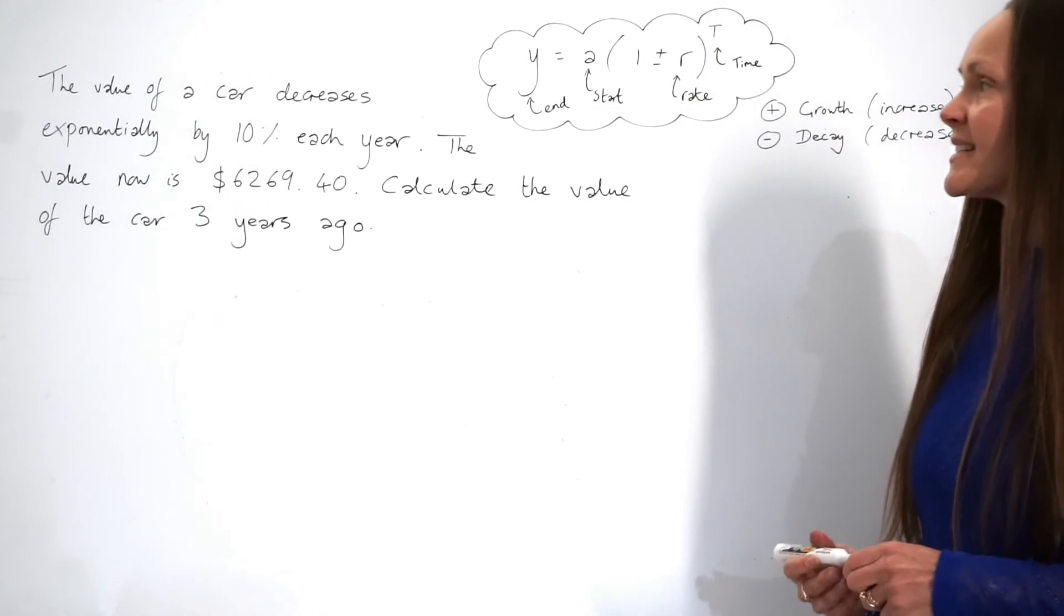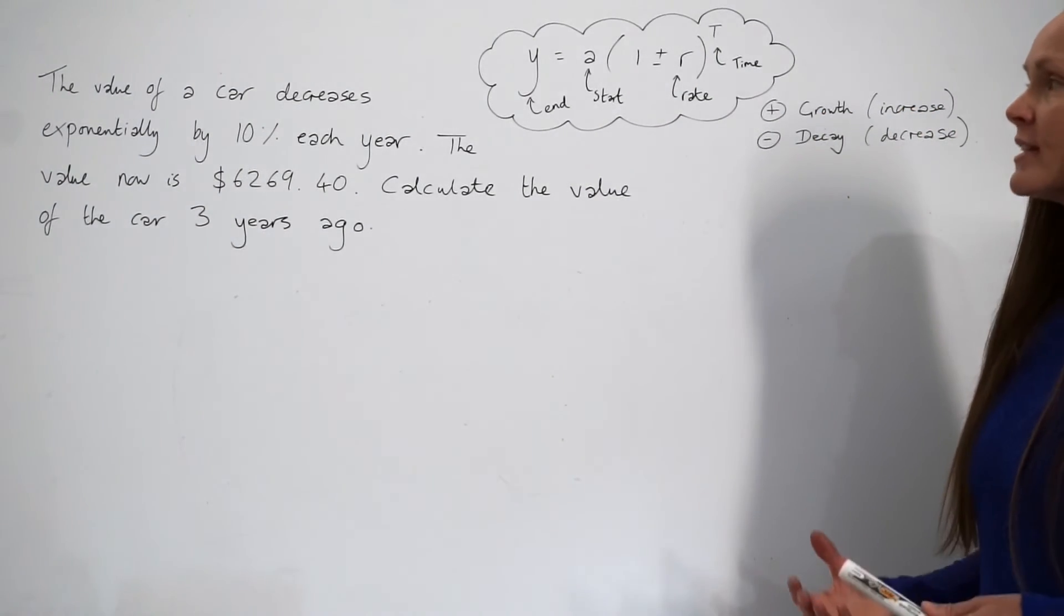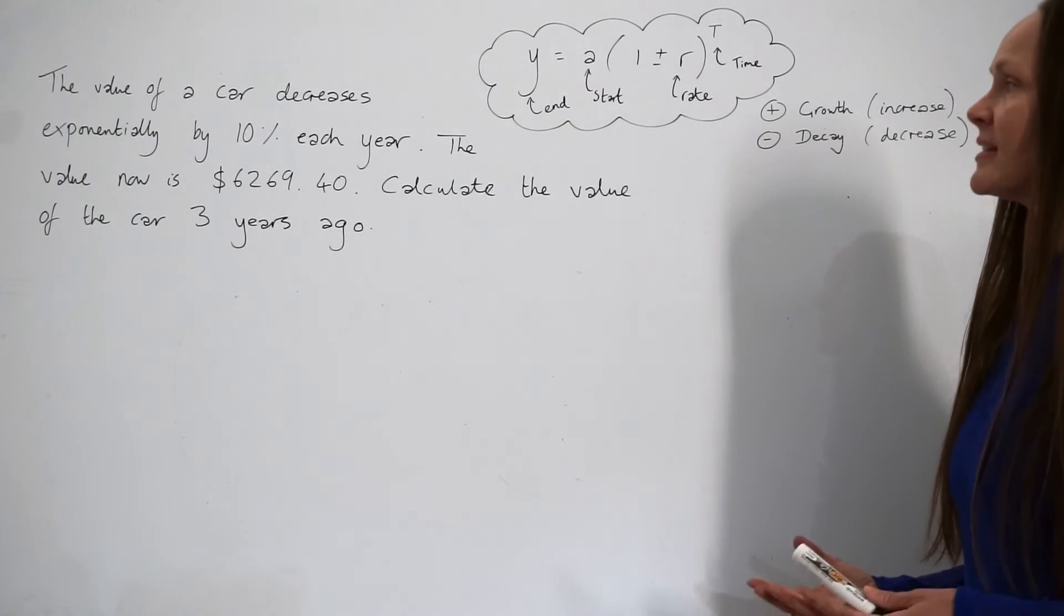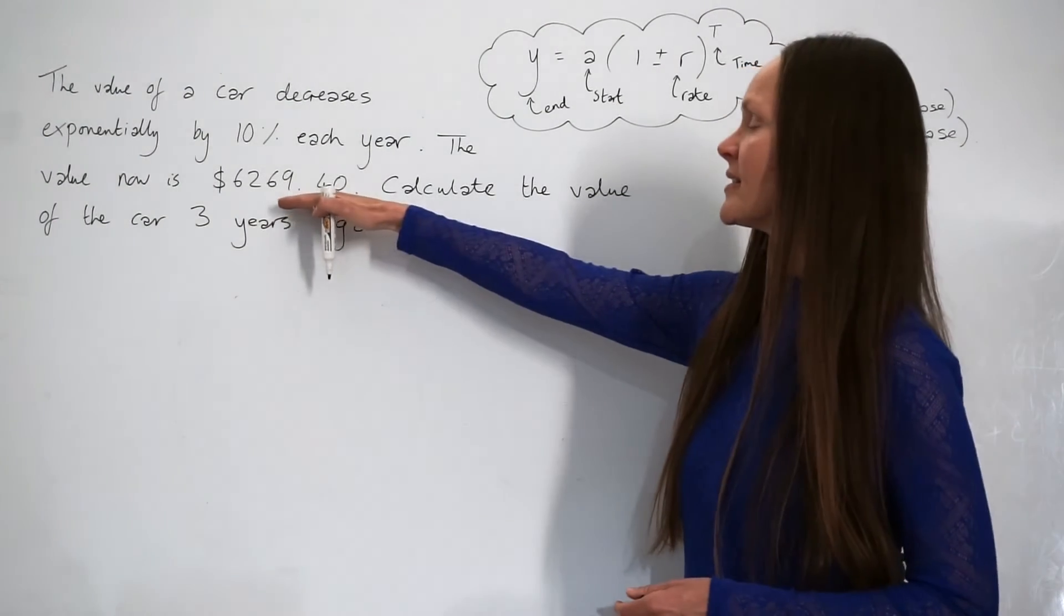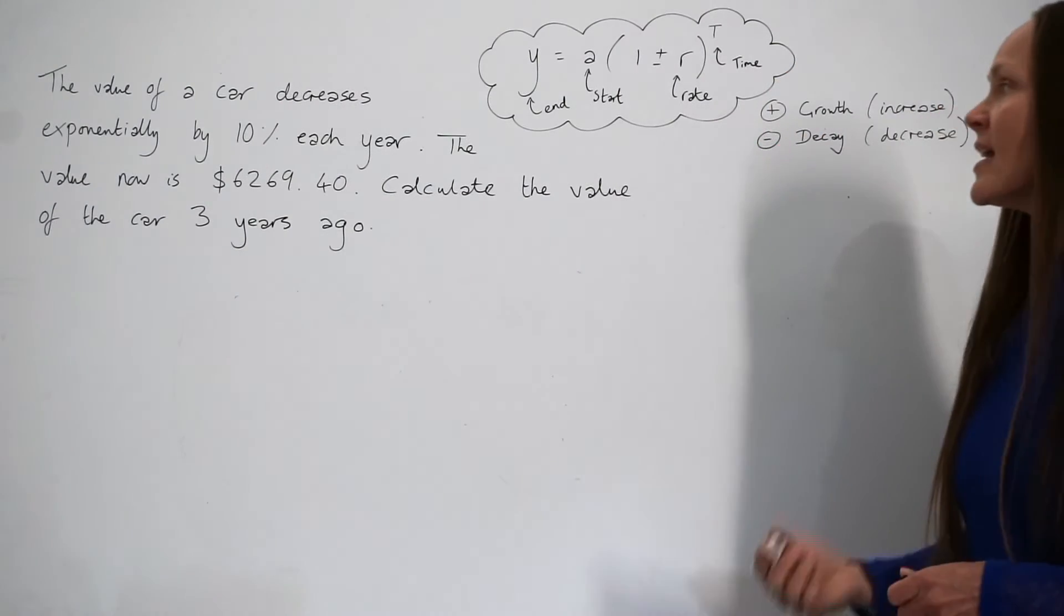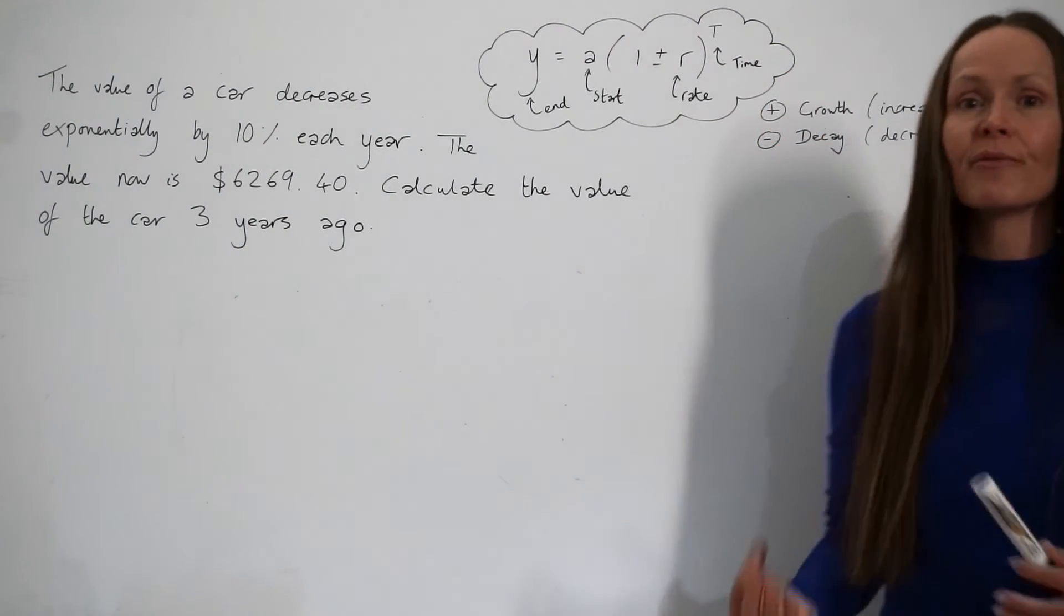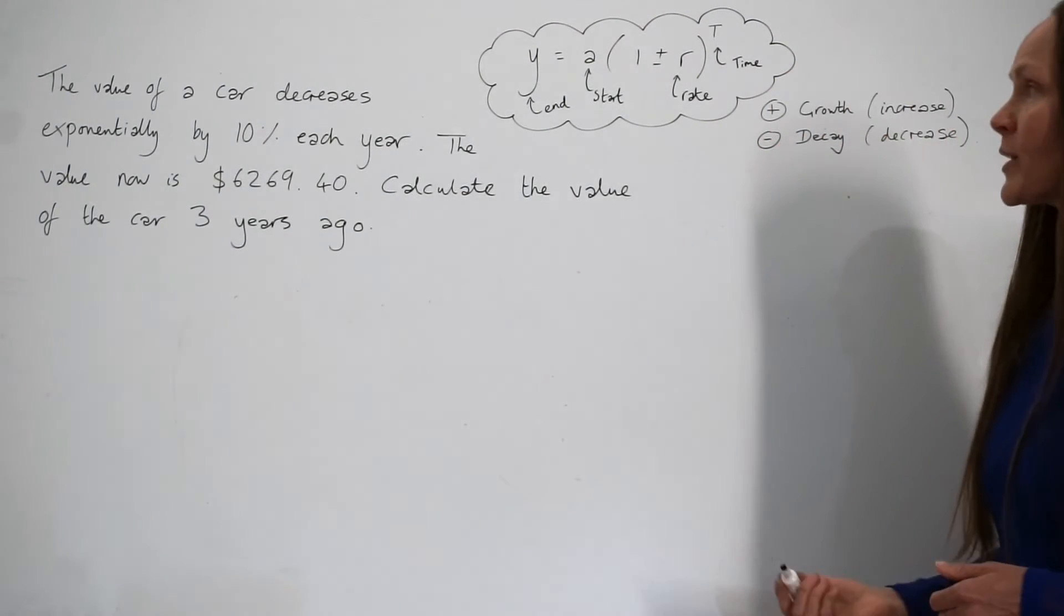So in this question, it says that the value of a car decreases exponentially by 10% each year. The value now is $6,269.40. Calculate the value of the car three years ago.